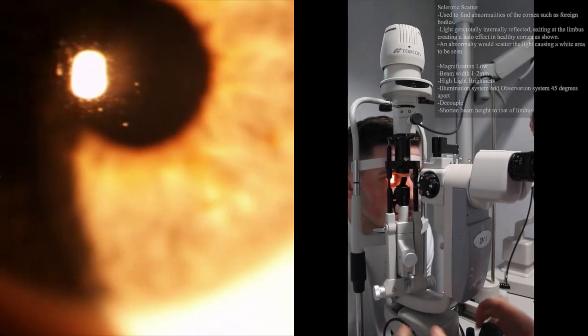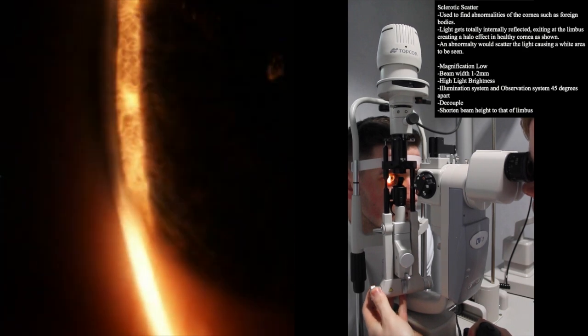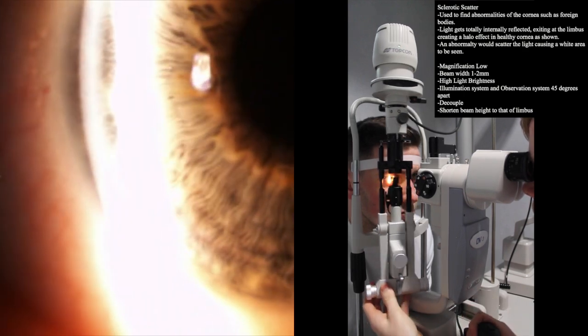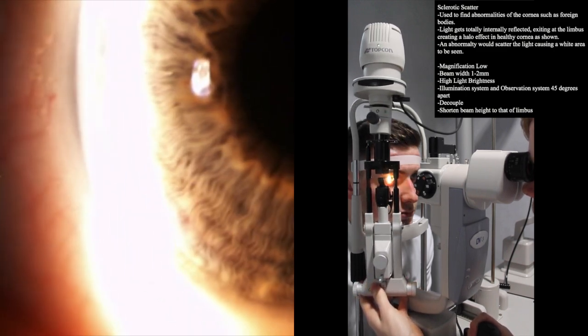To set up the slit lamp for this technique, we set the beam width to 1-2mm with high brightness, separate the observation system and illumination system by 45 degrees, and have the magnification on low.